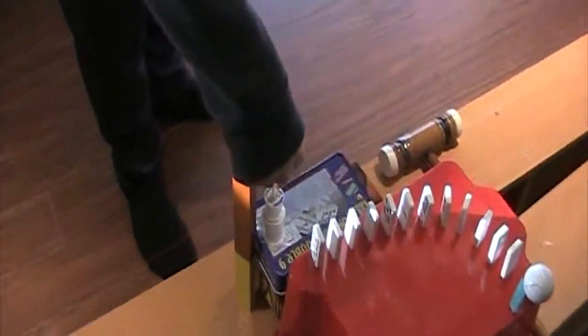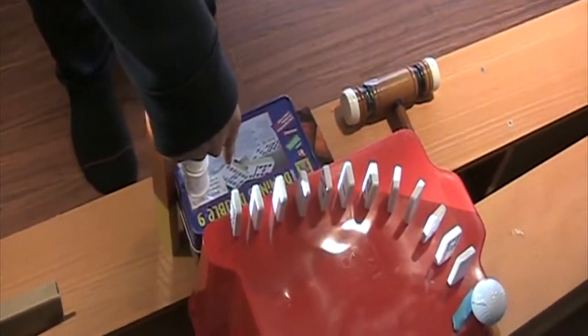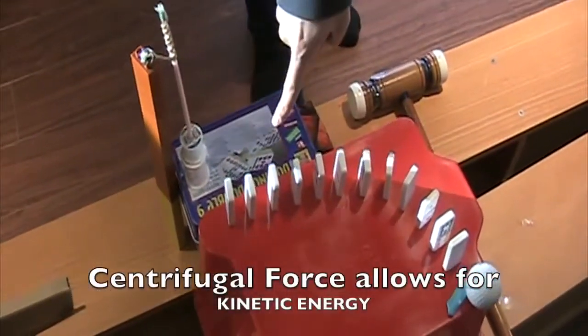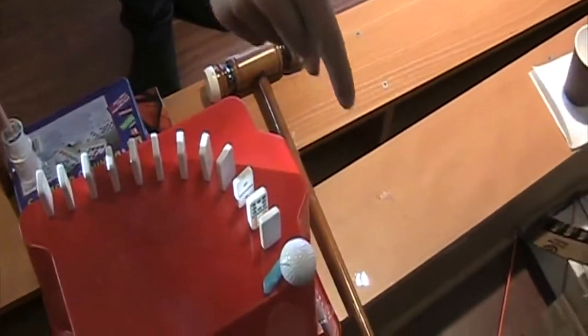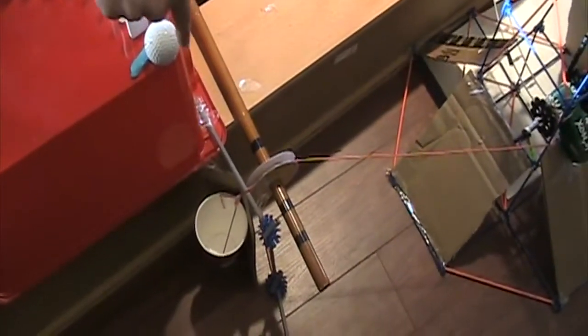This will start a device using centrifugal force, which will eventually spin around into this domino and start the chain, causing this golf ball to fall into that cup.